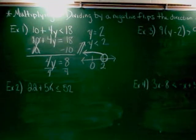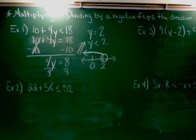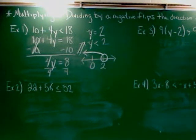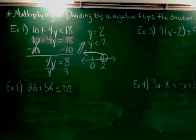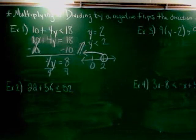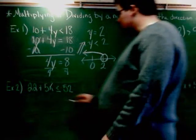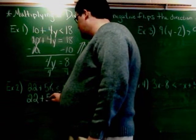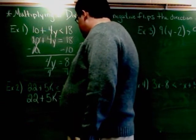22 plus 5k is less than or equal to 52. All right, so again, first thing I'm going to do is go ahead and change that into an equal sign. So I'm going to rewrite this as 22 plus 5k equals 52.